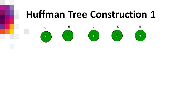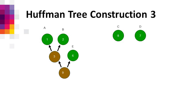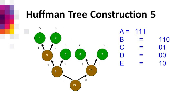For ABCDE with frequencies 1, 2, 8, 7, 9: we take B (frequency 1) and the next lowest (frequency 2) and merge, creating a new node with value 3. The next lowest frequencies are 3 and 6 — merging makes 9. Next lowest are 7 and 8 — merging makes 15. The remaining frequencies 10 and 9 are merged, making a binary tree with codes for A, B, C, D, E with a total of 24.